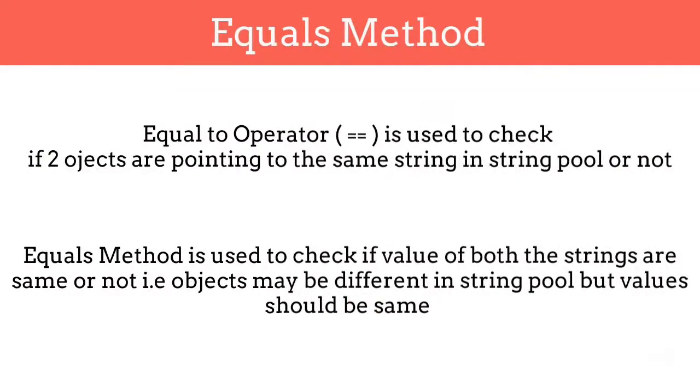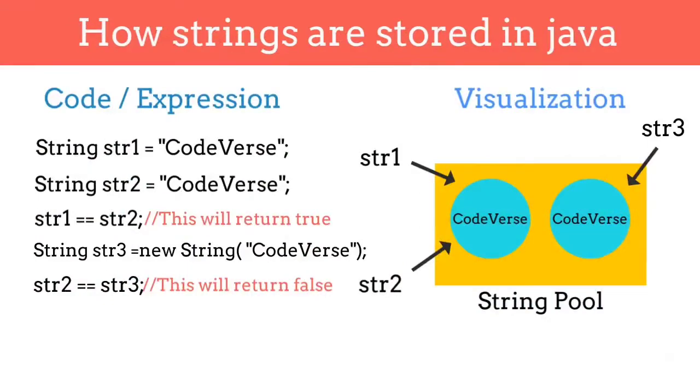Equals method is used to check the values of two strings. Now if we write str2 dot equals str3, then it will return true.